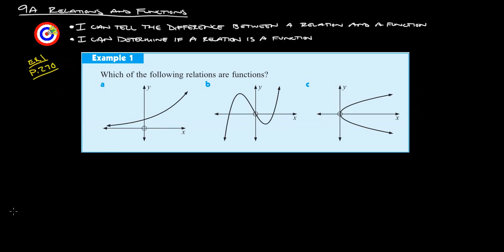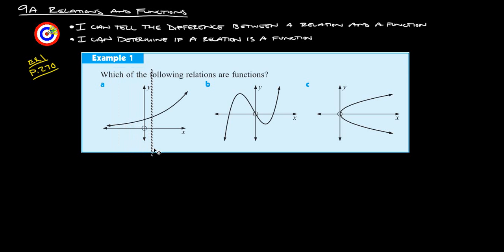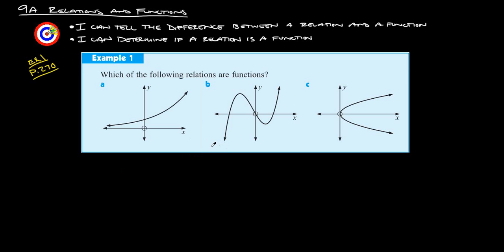One last thing to look at: which of the following graphs are functions? If any X value has two different Y values, it's not a function. The easiest way to check is the vertical line test — take a straight vertical line and run it left to right across the graph. If at any point two different points hit the graph on the same vertical line, it's not a function. Graph A passes the vertical line test, so A is a function.